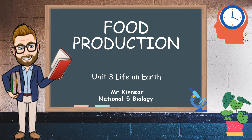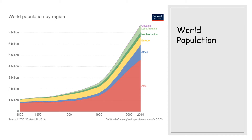Hello again biologists. Mystic and Air here with another video lesson for National 5 Biology. We're on Unit 3: Life on Earth, and today we're going to look at food production, which is Key Area 3.5. The need for food production is obviously driven by world population. If you remember back to the start of this unit when we were talking about the vocabulary of biodiversity, population relates to the number of one species.